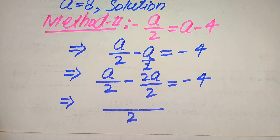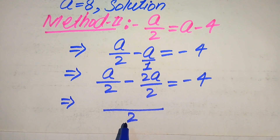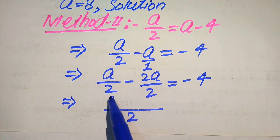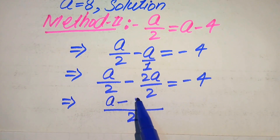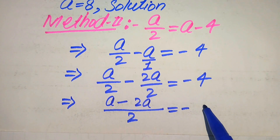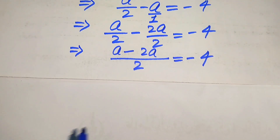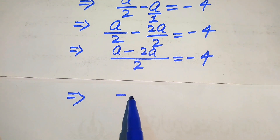Taking the LCM, the 2s cancel out. We get a minus 2a over 2 is equals to minus 4. Simplifying, a minus 2a becomes minus a, so we have minus a over 2 is equals to minus 4.